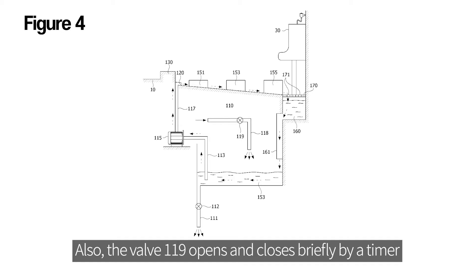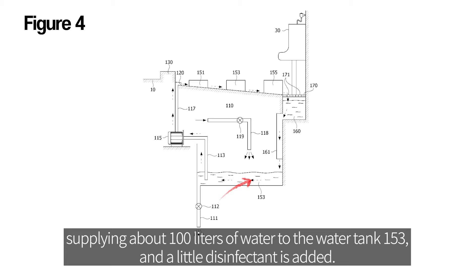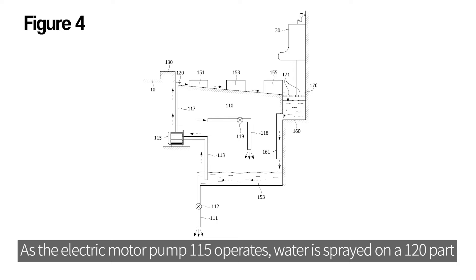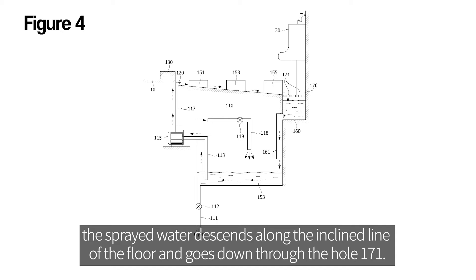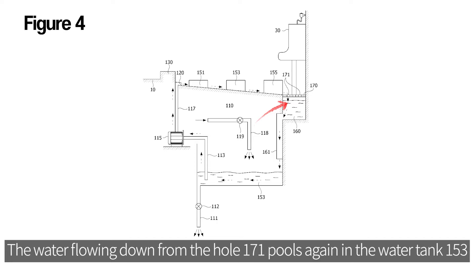Also, the valve 119 opens and closes briefly by a timer, supplying about 100 liters of water to the water tank 153, and a little disinfectant is added. As the electric motor pump 115 operates, water is sprayed on a 120 part, and since the floor around the urinal is inclined, the sprayed water descends along the inclined line of the floor and goes down through the hole 171.